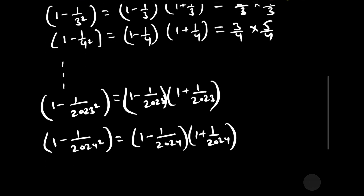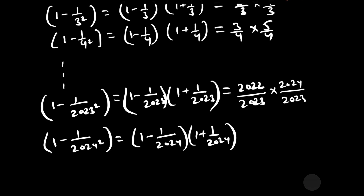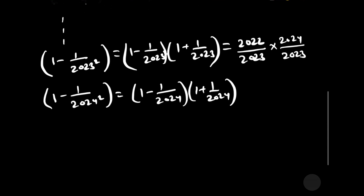We can write 1 minus 1 by 2023 as 2022 divided by 2023, and 1 plus 1 by 2023 as 2024 divided by 2023. Now, 1 minus 1 by 2024 can be written as 2023 divided by 2024, and 1 plus 1 by 2024 can be written as 2025 divided by 2024.